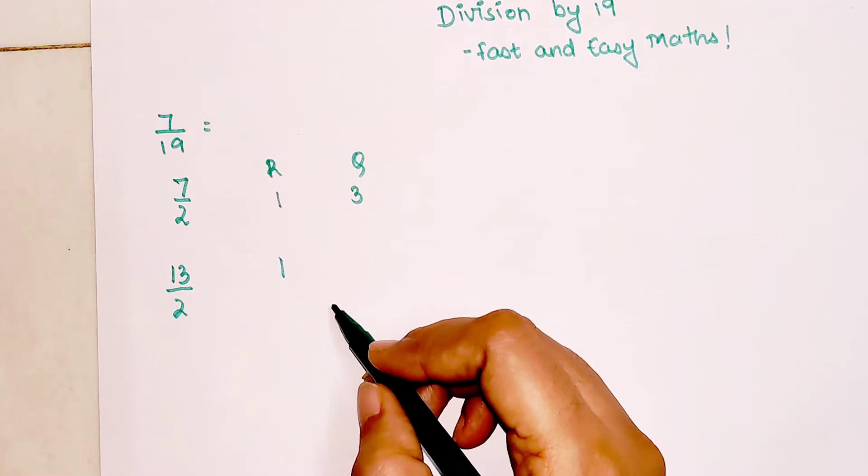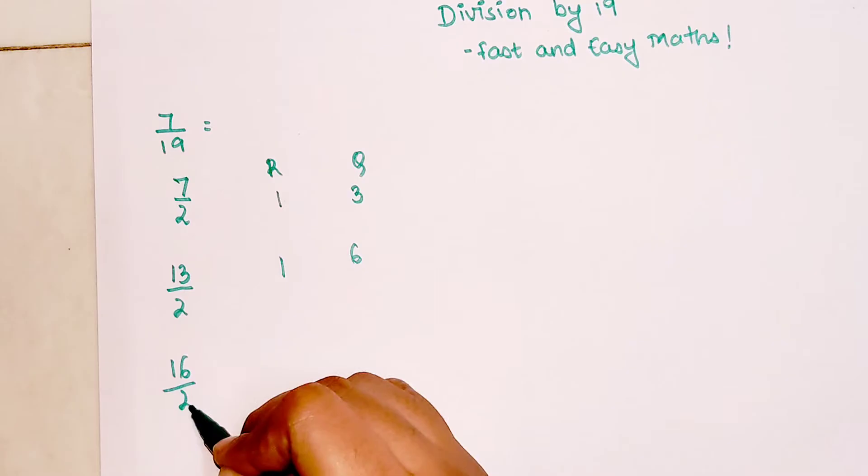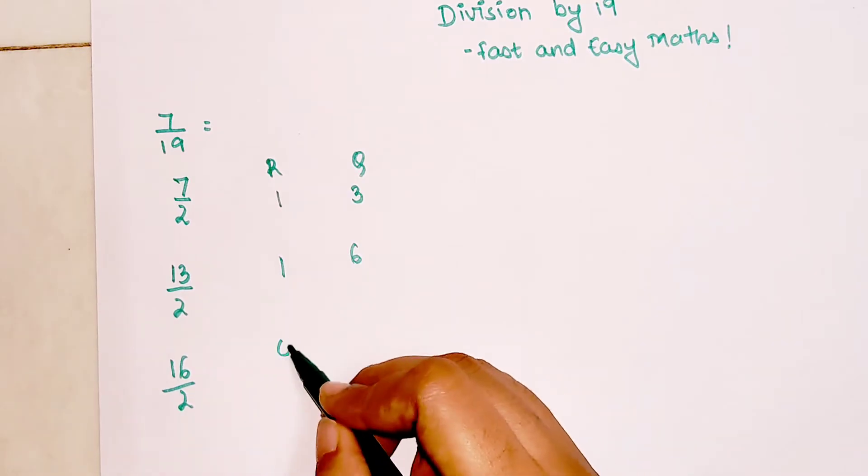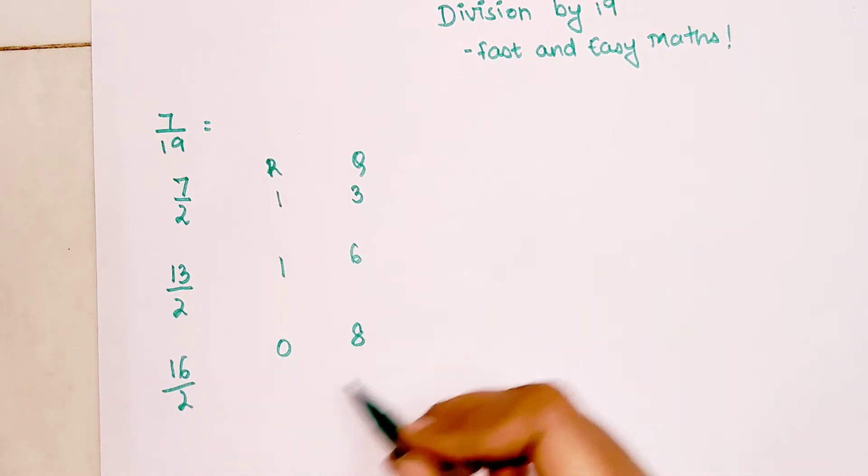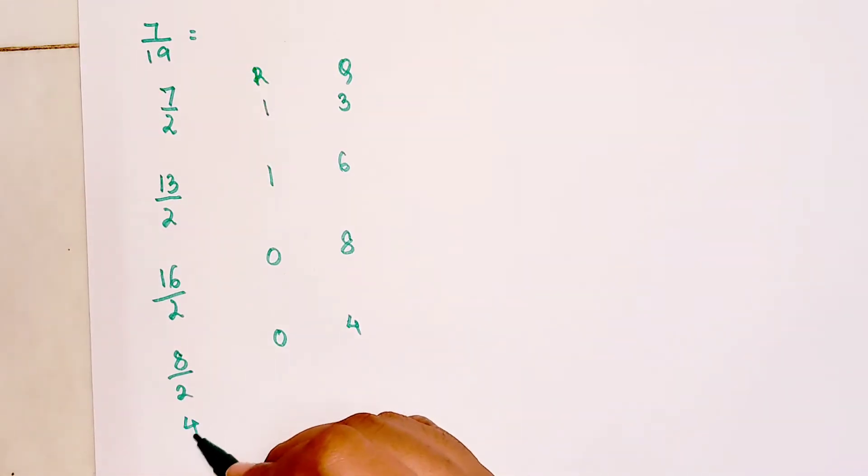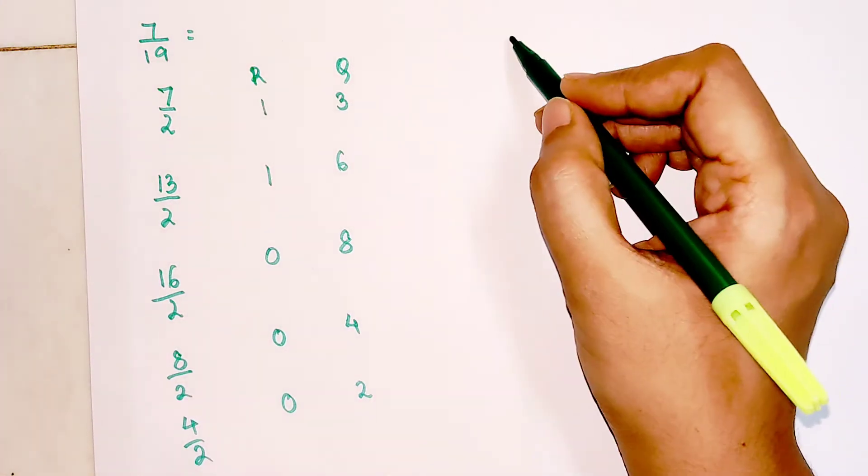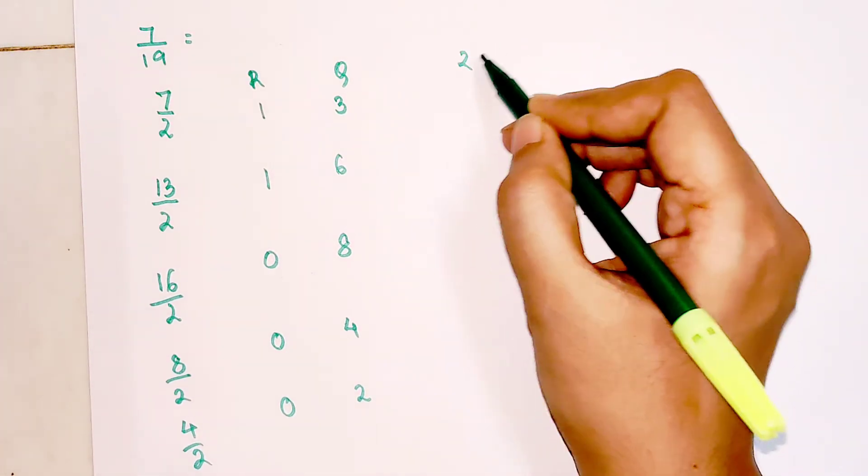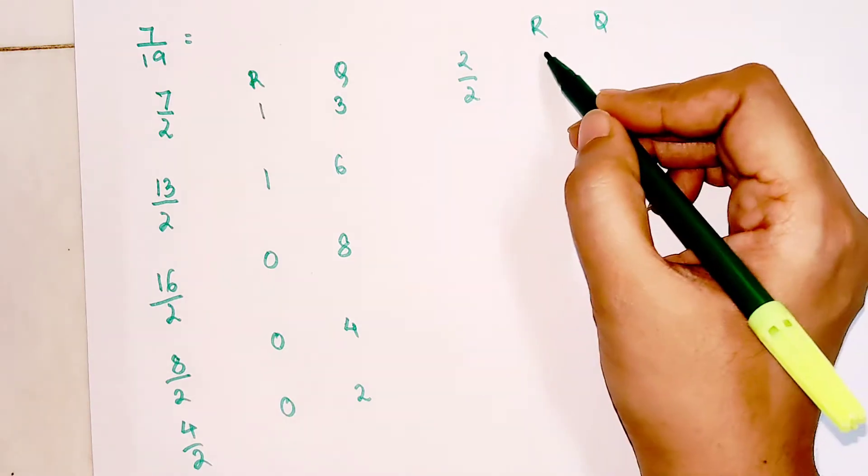Now 16 divided by 2 is even, so remainder is 0 and we have 8. Then 8 divided by 2, remainder is 0, we get 4. Then 4 divided by 2, we get 0 and 2. I'm going to continue this over here. We have 2 divided by 2, remainder 0 and quotient 1.